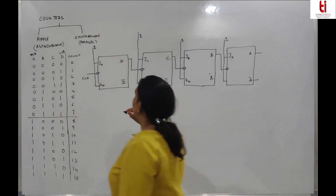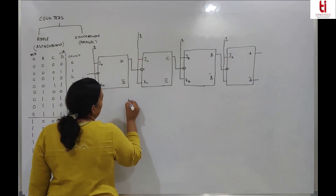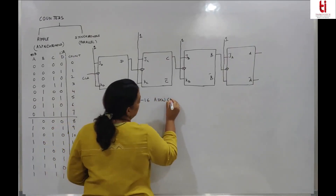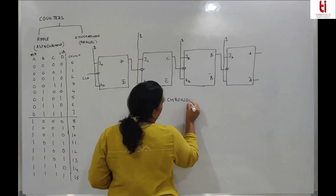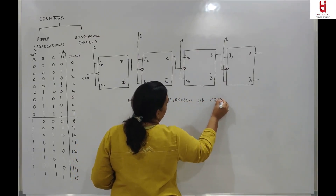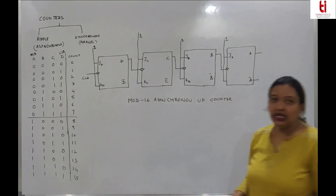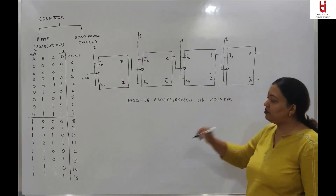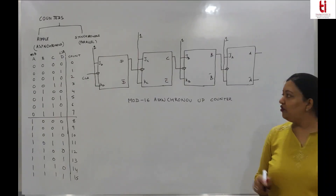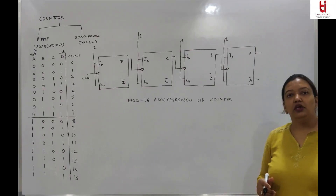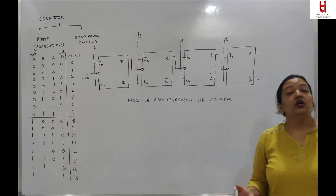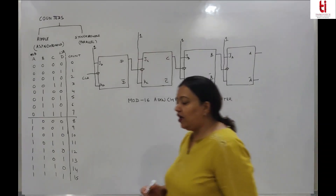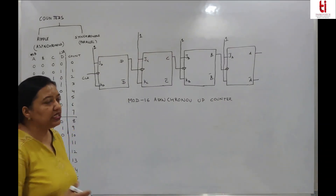This is an asynchronous up-counter counting 16 states, so it is a mod-16 asynchronous up-counter. The number of states tells you the mod of the counter. With 4 flip-flops you can count 2 raised to power 4, which is 16. With 3 flip-flops you get 8 states, and with 5 flip-flops you get 32 states. The number of flip-flops determines the mod of the counter.